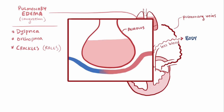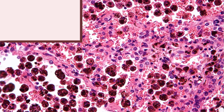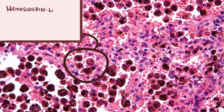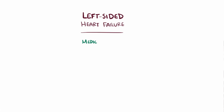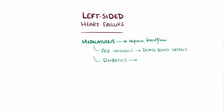If enough fluid fills the capillaries in the lungs, they can rupture, leaking blood into the alveoli. Alveolar macrophages then eat up these red blood cells, causing them to take on a brownish color from iron buildup; these are called hemosiderin-laden macrophages, also known as heart failure cells. For left-sided heart failure, certain medications can be prescribed to help improve blood flow, like ACE inhibitors which help dilate blood vessels, as well as diuretics to help reduce overall fluid buildup in the body.